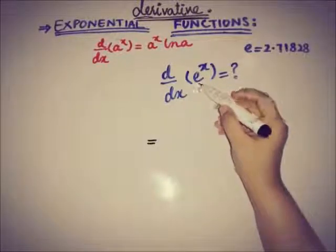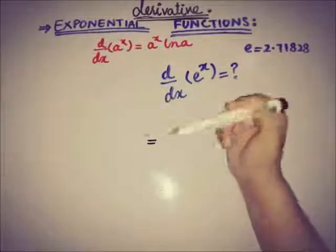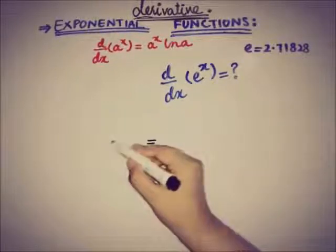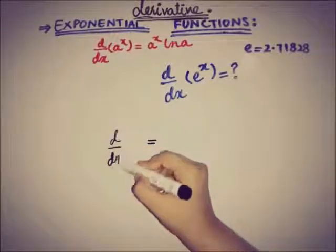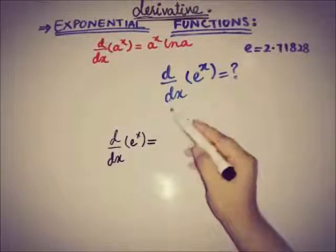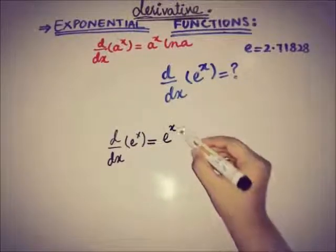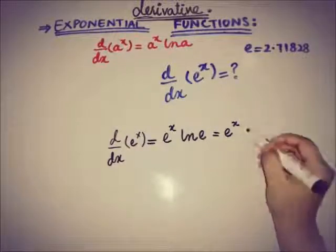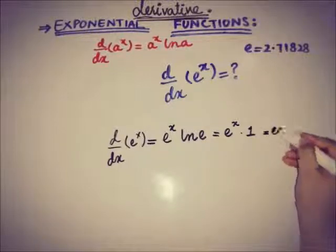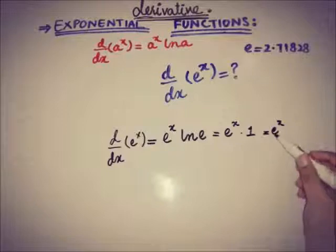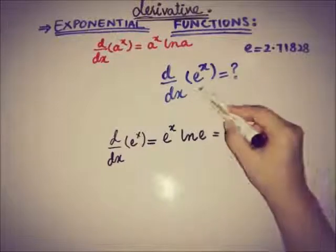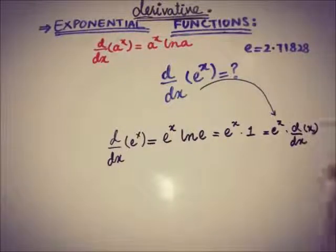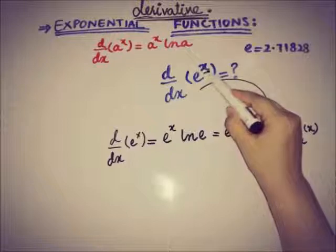Since e is a well-known constant — Euler's number — the rate of change of e to the power x equals e to the power x times the natural log of e. We know that the natural log of e equals one, so we are left with just e to the power x. Therefore, the rate of change of the exponential function e to the power x is simply e to the power x itself.